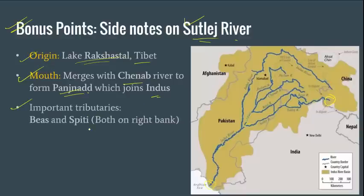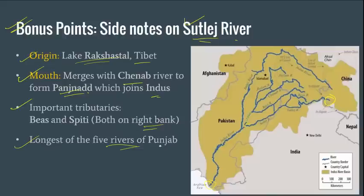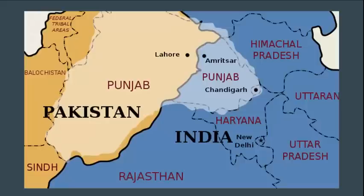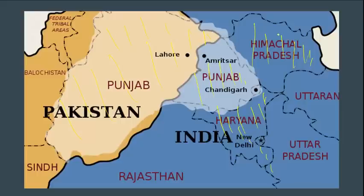Some important points: Beas and Spiti are right bank tributaries of Satluj. Satluj is also the longest river of Punjab. The name Punjab comes from 'Panch' plus 'Ab' — Ab means water — so it is the land of five rivers: Jhelum, Chenab, Ravi, Beas, and Satluj. When we say Punjab, we are talking about the Punjab region, not just Punjab state — pre-partition Punjab, which also included what is now Himachal Pradesh and Haryana, all before 1966.